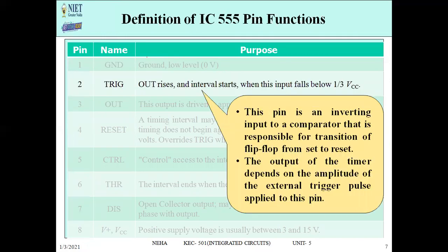Pin 2 is the trigger pin. As the name suggests, it is used to provide external triggering. This pin was the second op-amp input — it is an inverting input to a comparator that is responsible for the transition of the flip-flop from set to reset. The output of the timer depends on the amplitude of the external trigger pulse applied to this pin. Its use will be discussed in detail when we cover the 555 timer as a monostable or astable multivibrator.